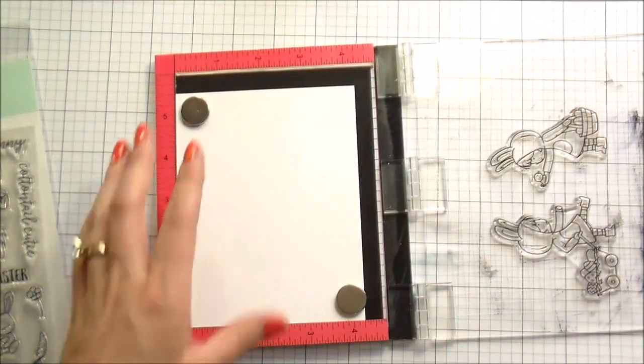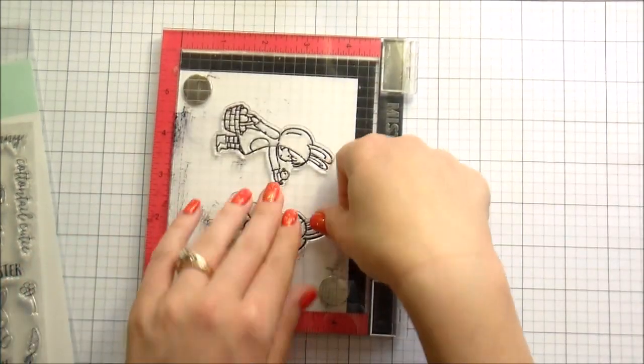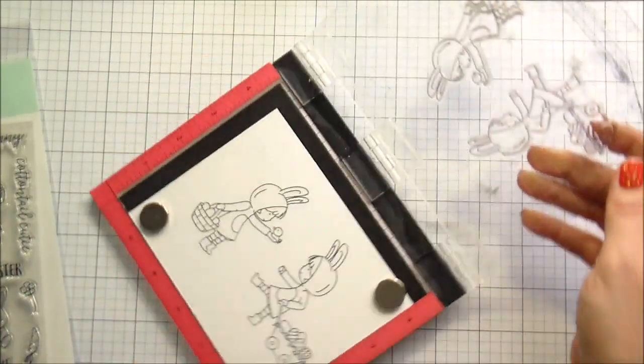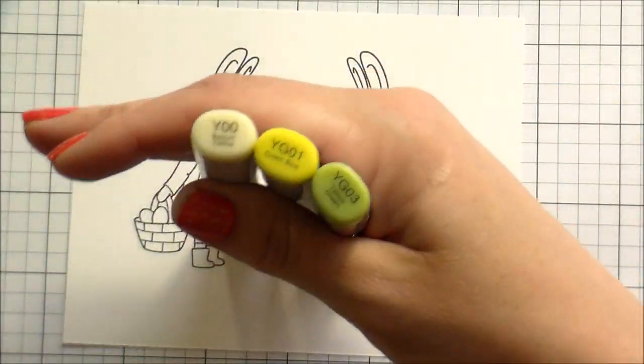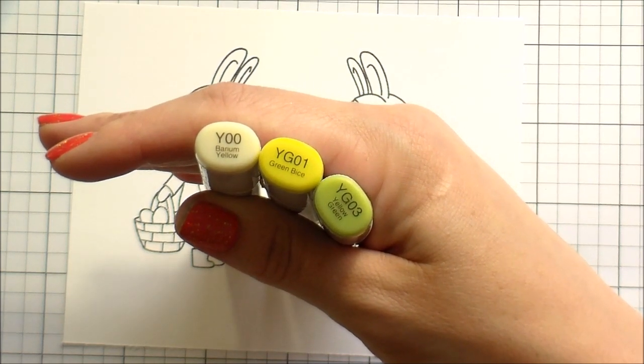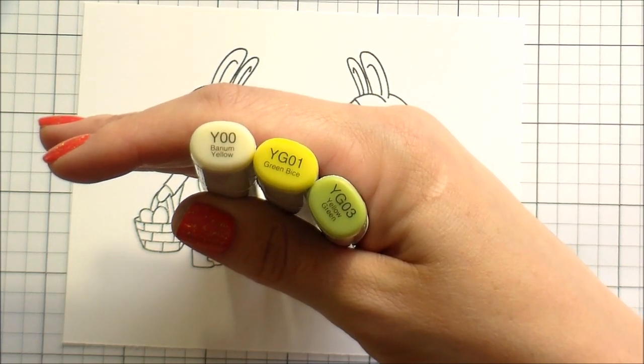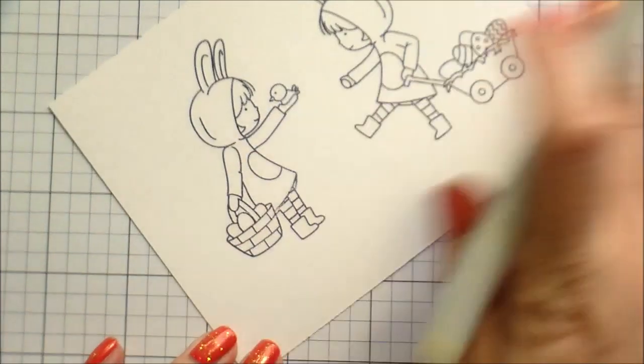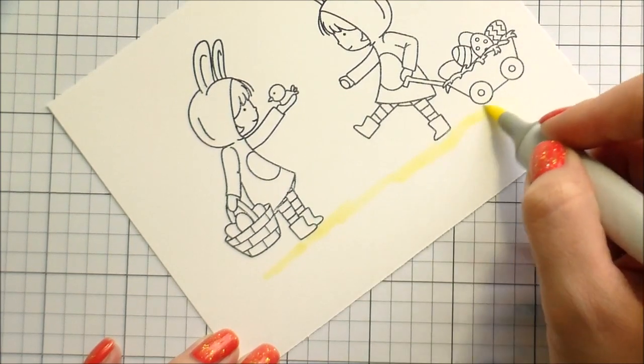There are a bunch of really adorable little stamps in this set, but I decided I was going to use both of the little girls. So they look like one was handing a chick to the other. And basically we're just going to be doing a whole lot of Copic coloring. It's a one layer panel. I decided I wanted to stick to more traditional spring colors, so a little bit lighter.